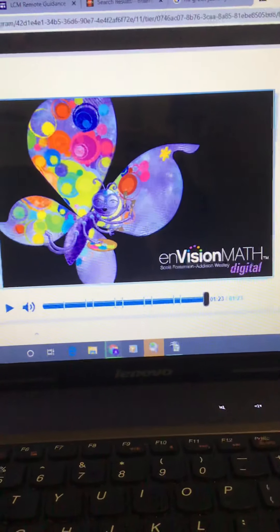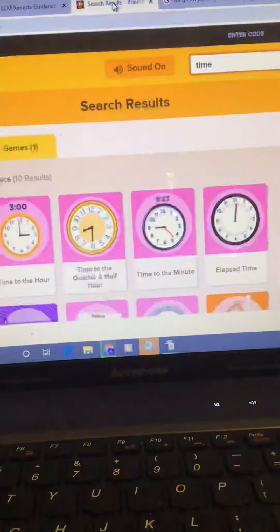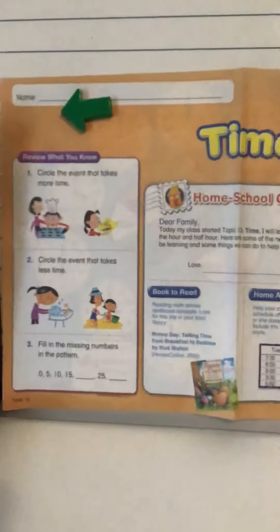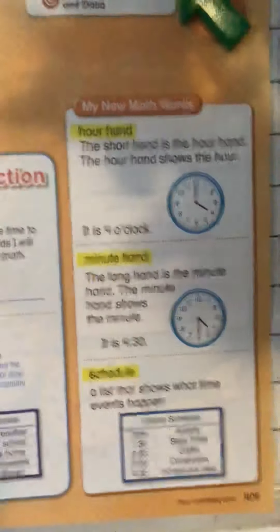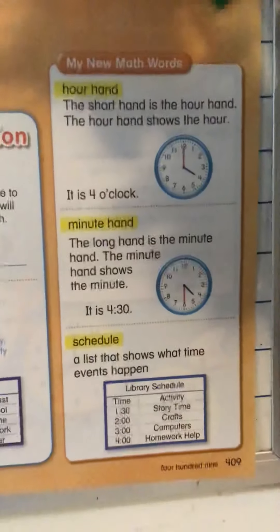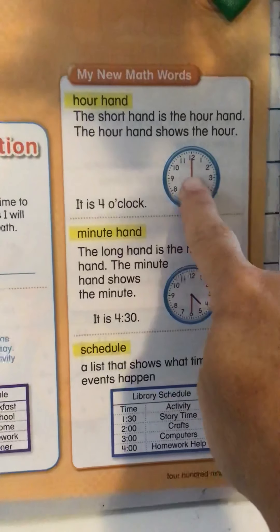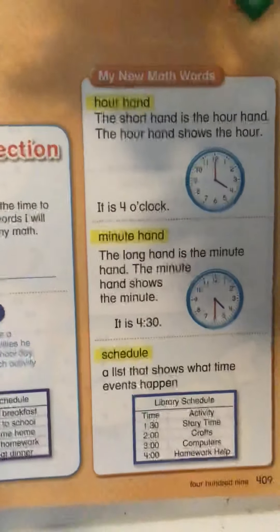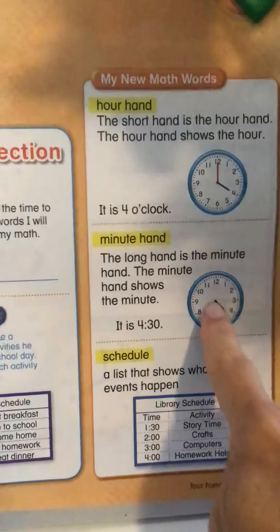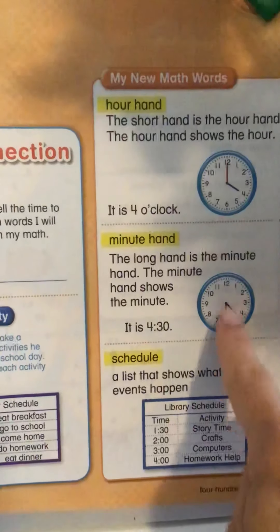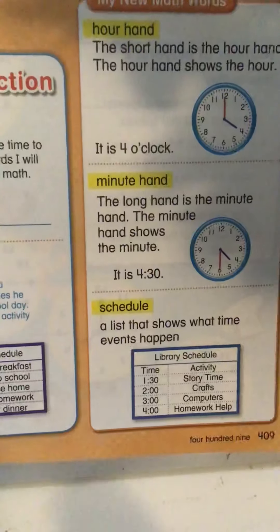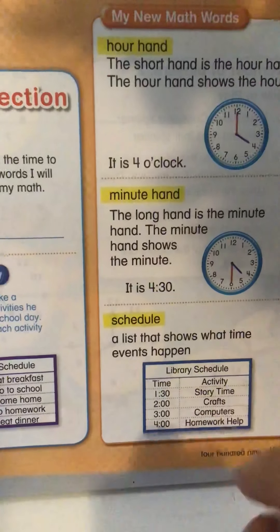Let's take a quick look at our math paper. You should have your first paper for time. When we open it flat on our desk or on our workspace, we can see the words we are learning. The hour hand is the short hand. It's pointing to the four in this picture, so it is four o'clock. The minute hand is the longer hand. This one is pointing to the six, so we know that 30 minutes have gone by. And schedule — a list that shows what times different things happen.